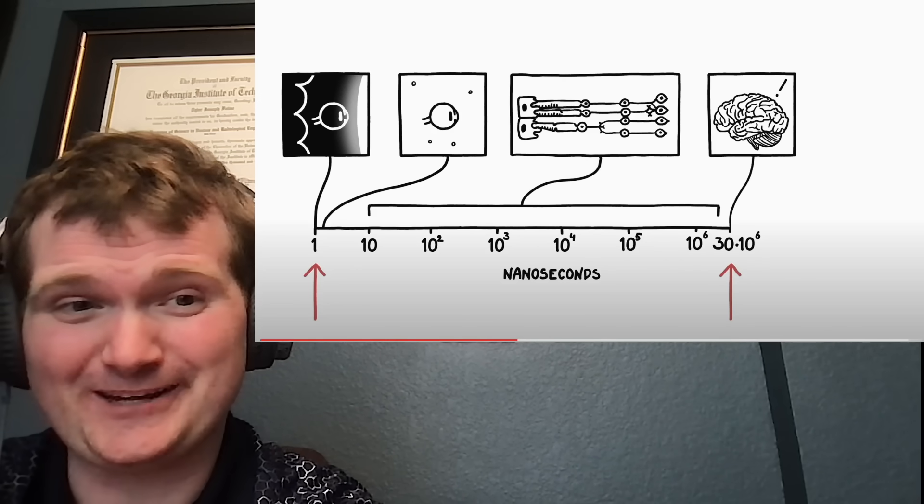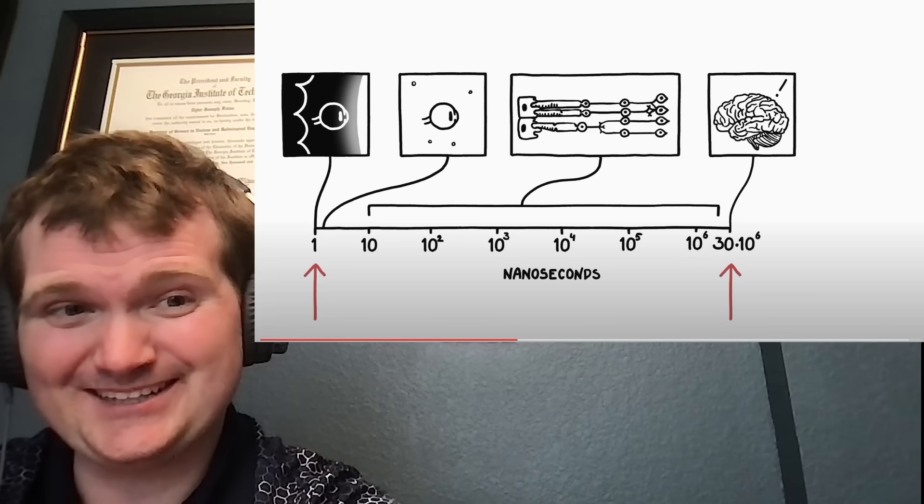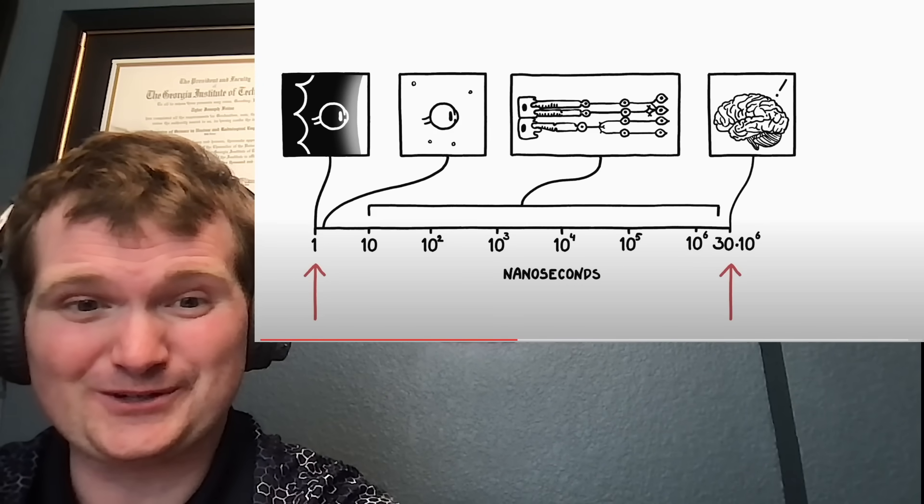You would spend one nanosecond on the sun, but it would take 30 million nanoseconds for your brain to notice. That's true. I mean, human reaction speed is far slower than nanoseconds. Nanoseconds are pretty quick, even for nuclear reactions.